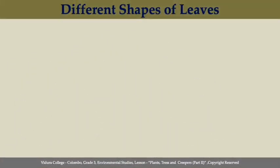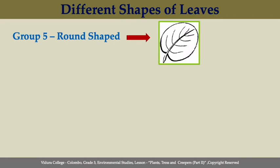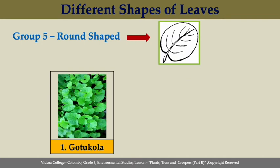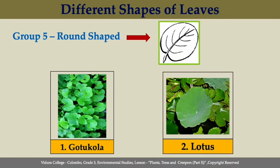The fifth shape is round-shaped. The round-shaped leaves edge is smooth and round without having any special features. As examples, cotocolor and lotus leaves can be taken.